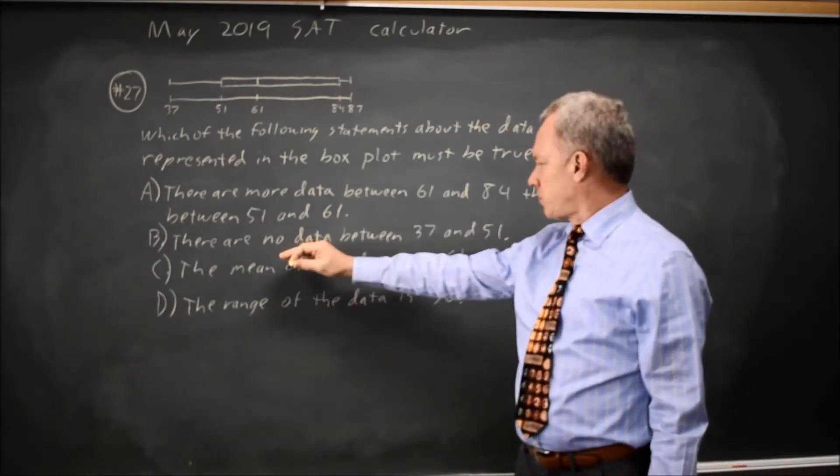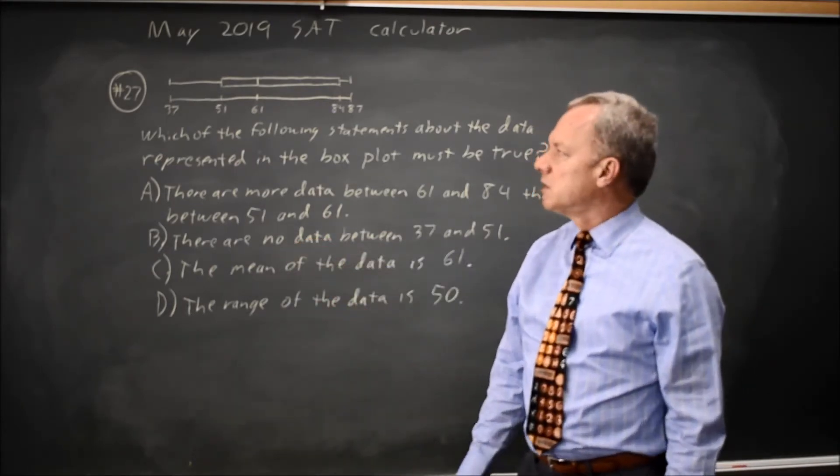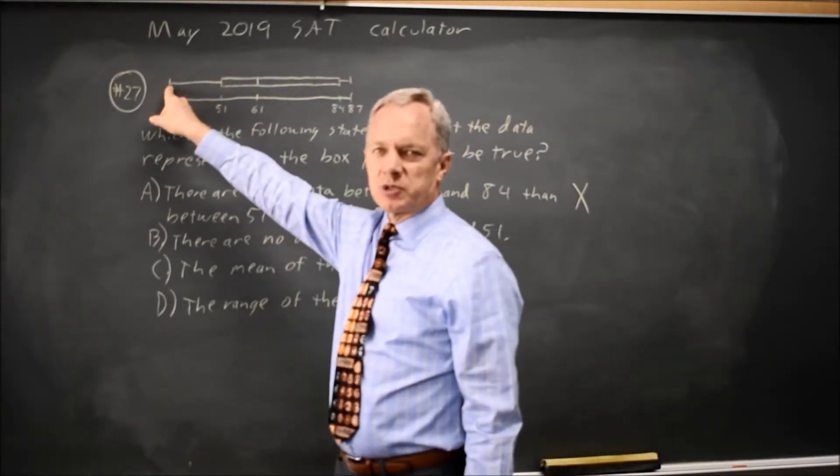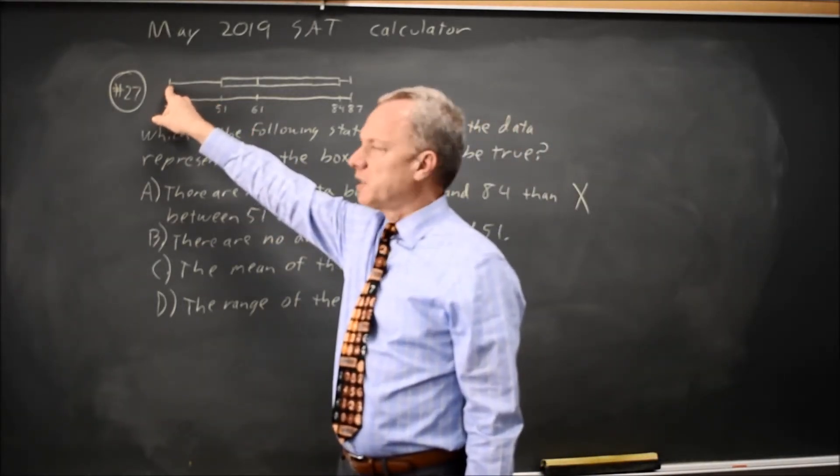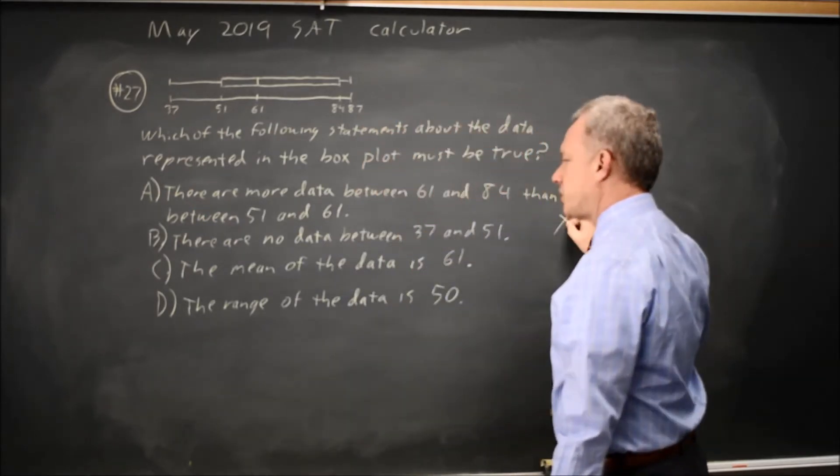Choice B, there are no data between 37 and 51. That's not true because the box plot shows that 25% of our observations are in that interval, so we can reject B.